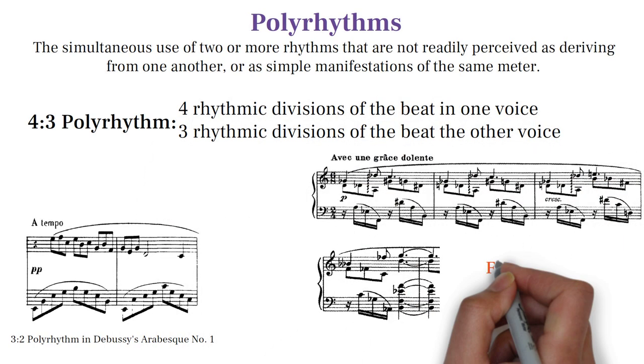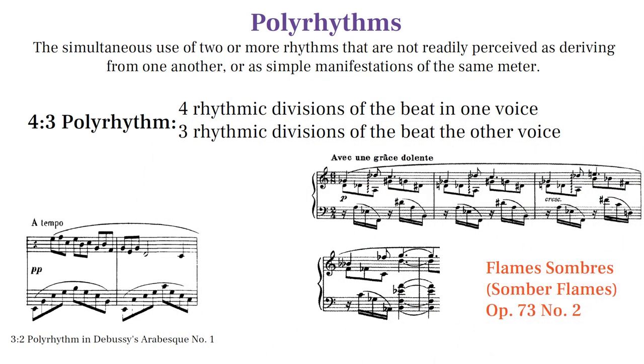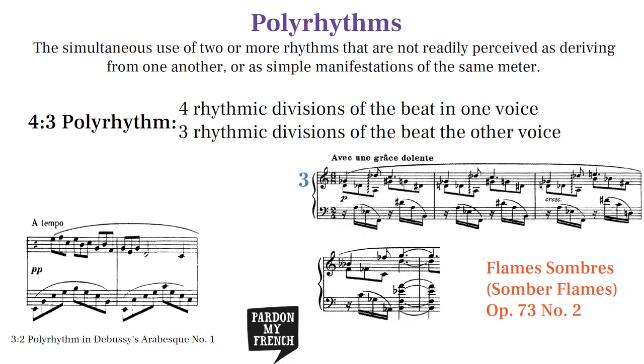Here's an example from the beginning of Flem's Sombra that uses divisions of three in the right hand and divisions of four in the left hand.